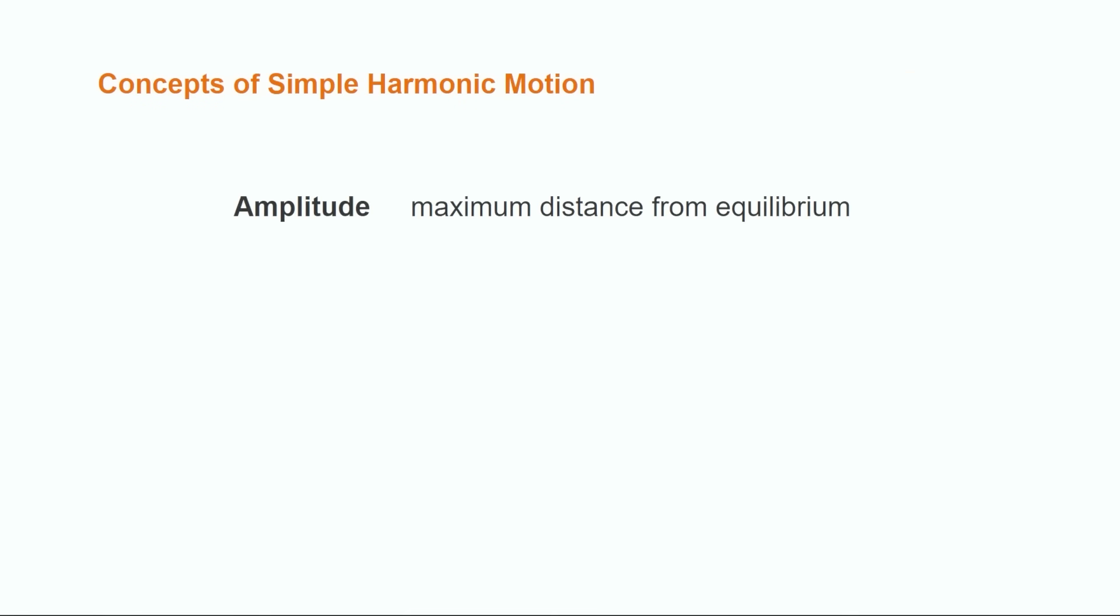Before we look at an example, there are three terms related to simple harmonic motion that you'll need to be familiar with. The first is amplitude, which is the maximum distance that an object gets from its equilibrium position. The second is period, which refers to how long it takes for the object to complete one cycle. The last term is frequency, which refers to the number of cycles per second. As you can see, the frequency is the reciprocal of the period.